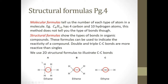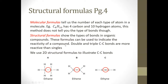Structural formulas are a way that we can determine what a compound is. We're going to elaborate on molecular formulas and show you different ways that molecules can be drawn. Molecular formulas tell us the number and type of each atom in a molecule — a formula of C4H10, for example, has four carbons and ten hydrogen atoms. It doesn't tell you much about the type of bonds. Structural formulas show the types of bonds in organic compounds, and these formulas can be used to indicate the reactivity of a compound.